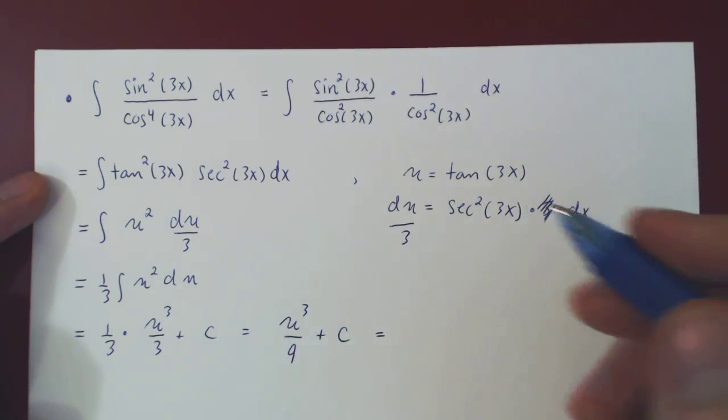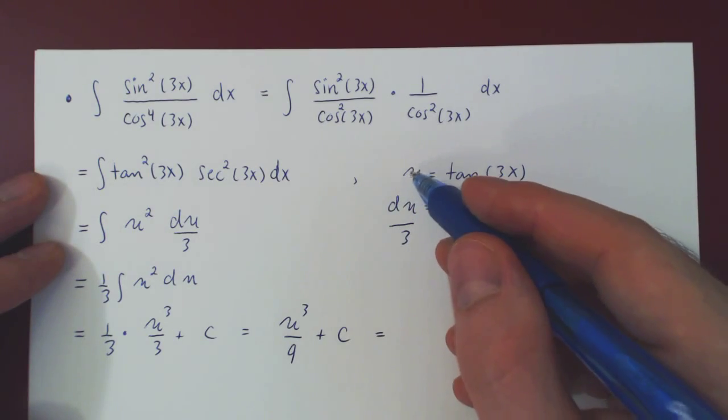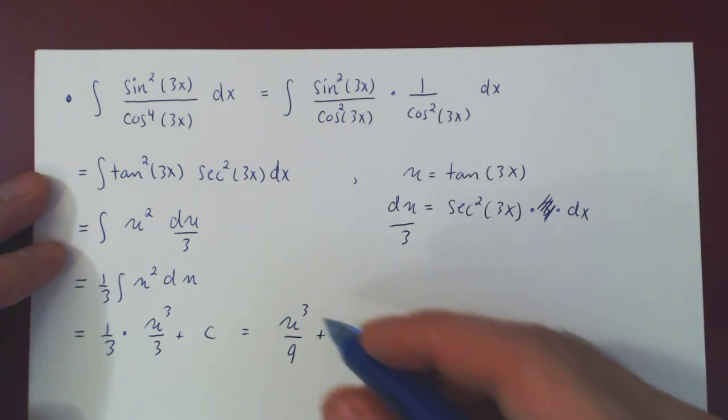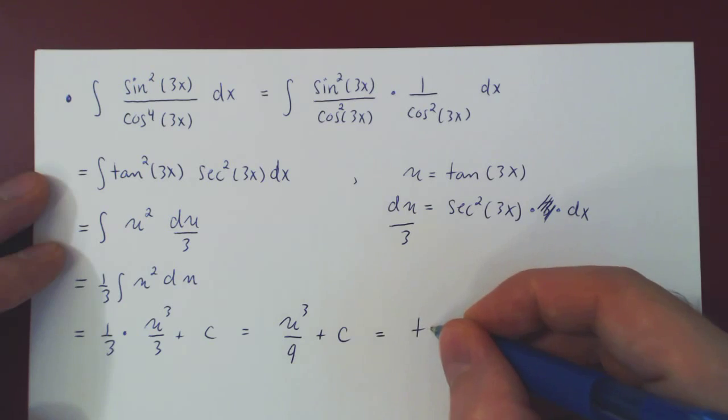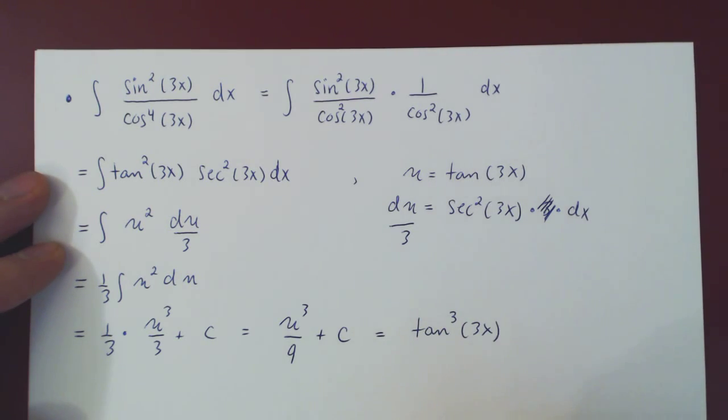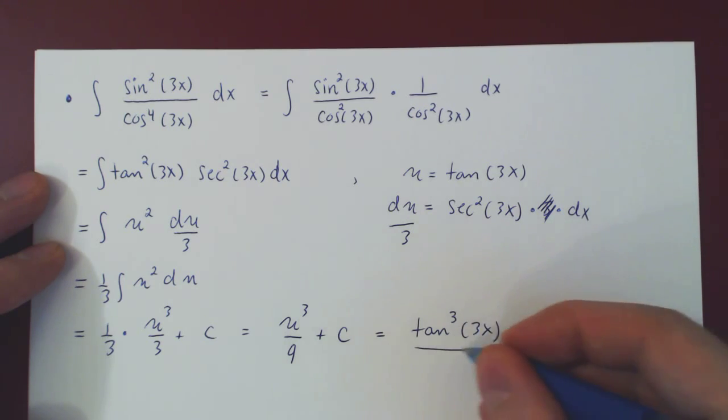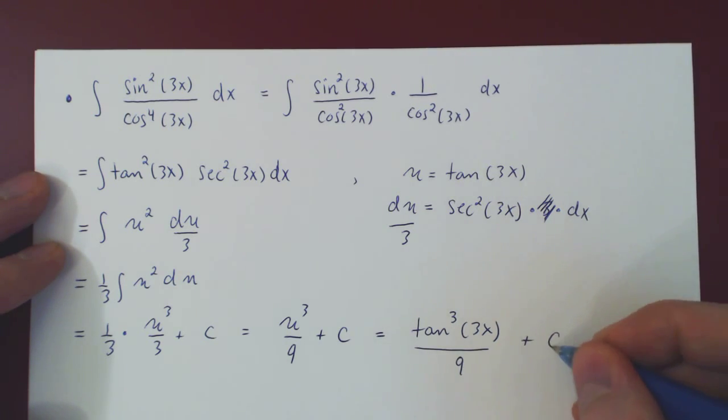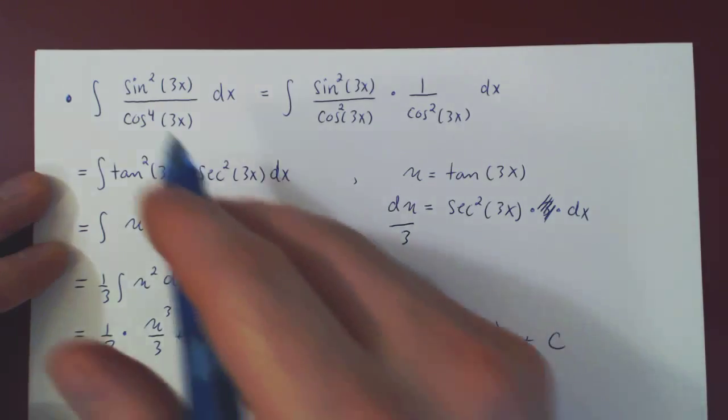And finally we want the answer back to a function of x, so we replace u by tan of 3x. So we have tangent cubed of 3x over 9 plus c. And that's our antiderivative to sin squared of 3x over cos to the 4 of 3x. So there you go.